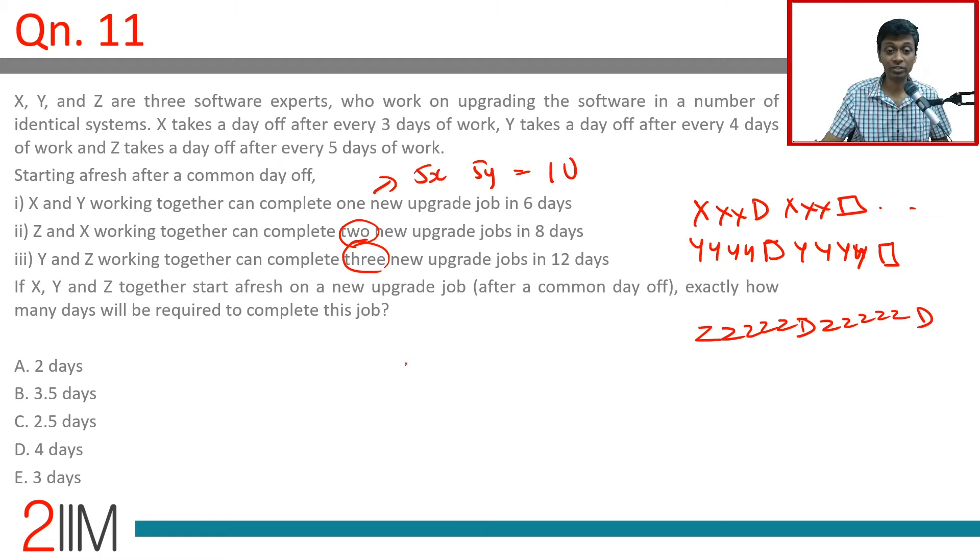Z and X working together can complete two upgrade jobs in eight days. In eight days, X will work six days. Z takes every six days, he misses one day. Of eight days, he'll miss only one day. So six X plus seven Z equals two upgrade jobs, where X is the amount of work X does in a day, Z is the amount Z does in one day.